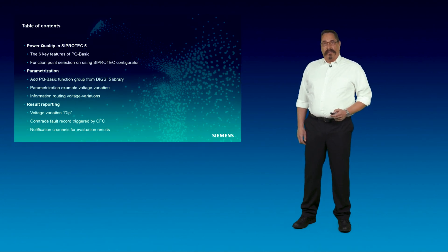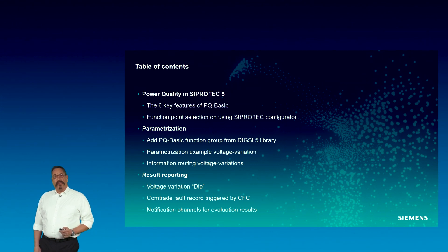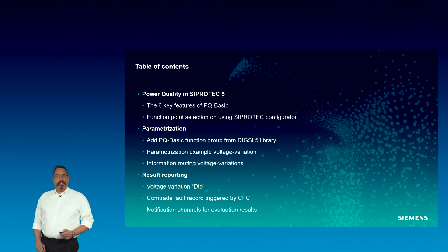On this slide you can see the agenda of the practically oriented session for Power Quality BASIC. I would like to introduce you to the six key features of PQBASIC, explain the prerequisites to equip a SIPROTEC 5 protection relay with that new functionality, provide an overview of the parameterization example for a voltage dip event, and explain the various ways to communicate PQBASIC evaluation results to clients — such as via IEC 61850, user logs, or fault records in COMTRADE format.